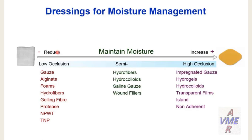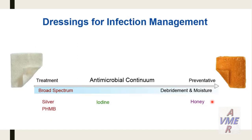Dressings that decrease moisture, suitable for heavy exudates: gauze, alginate, foam, hydrofiber, gelling fiber, protease modulating, and negative pressure. Semi-occlusive dressings for maintaining moisture: hydrofiber, hydrocolloid, saline gauze, and wound fillers. Dressings that increase moisture, suitable for dry wounds: impregnated gauze, hydrogel, hydrocolloid, transparent film, and iron. Dressings with antimicrobial effects for infection management: silver and PHMB, iodine, and honey — which has more preventive than treating effects. Dressings to control bad odor: antimicrobial silver and PHMB, charcoal and cyclodextrin, and honey.